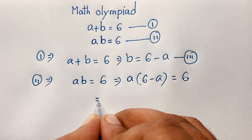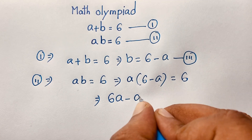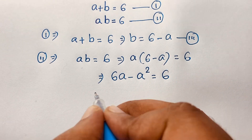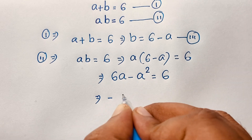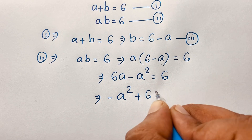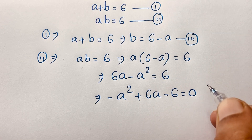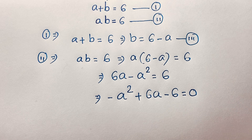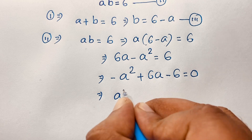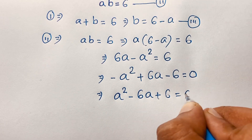You can see easily, A times 6 gives 6A, minus A times A gives minus A squared, and this equals 6. So the expression will be minus A squared plus 6A. If I move this value to this side, it will be minus A squared plus 6A minus 6 is equal to 0.